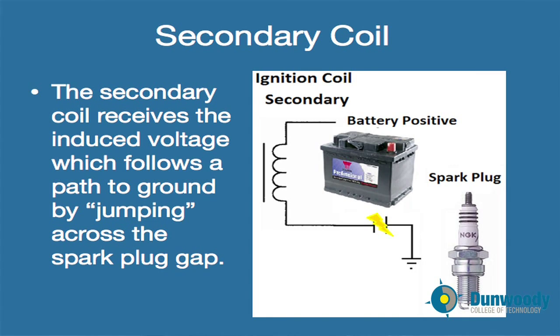That gap can range from 30 thousandths of an inch up to 60 thousandths of an inch, and when worn out it can be even more. Thank you for watching this basic overview of ignition systems. If you'd like to continue learning, the next video covers analog and digital signals.